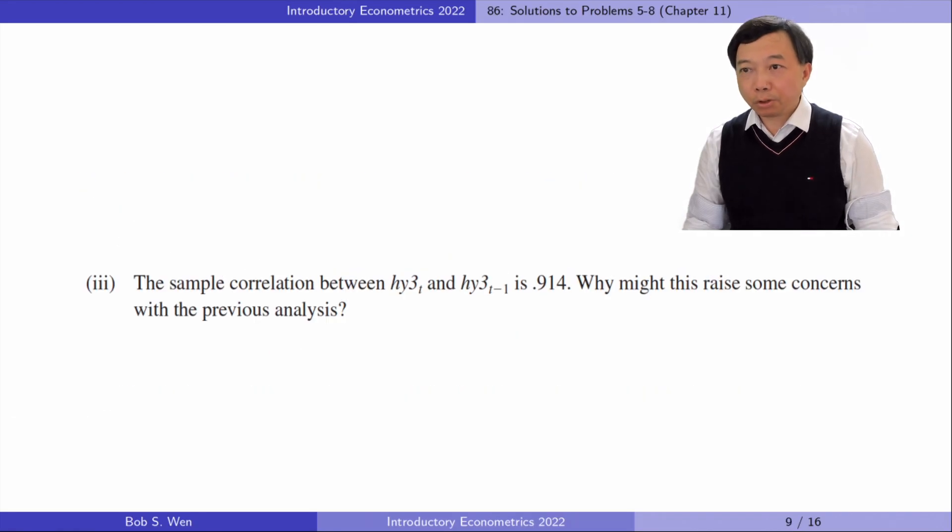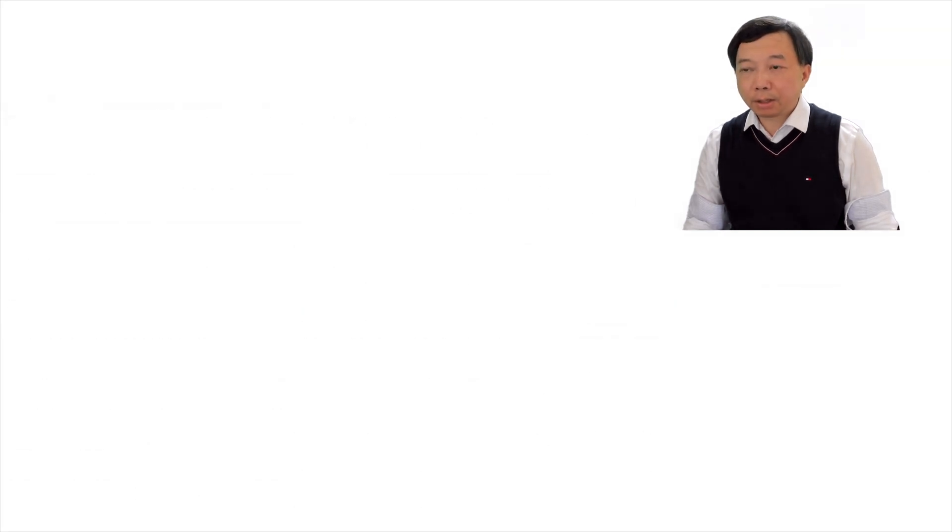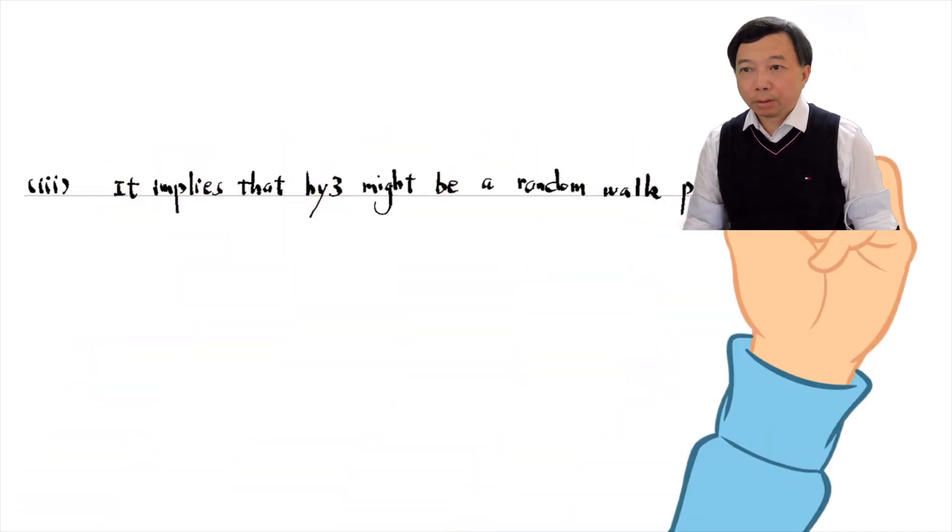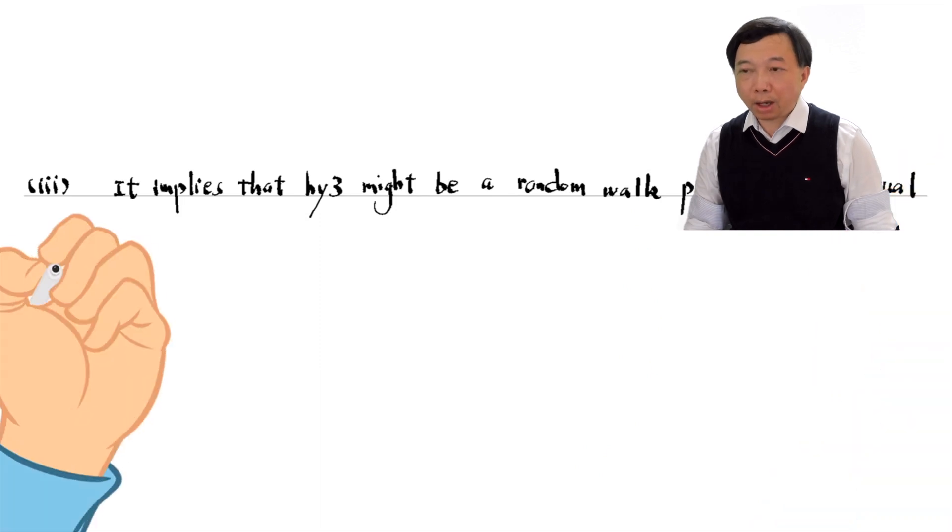In part 3, the sample correlation between hy3_t and hy3_{t-1} is 0.914. Why might this raise some concerns with the previous analysis? It implies that hy3 might be a random walk process. The usual t-statistics are not valid.